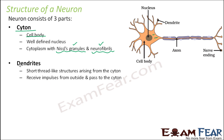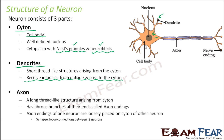The next part is dendrites. Often dendrites are not considered a separate structure — sometimes they are included in the cell body. Dendrites are short thread-like structures arising from the cytoplasm. From the cell body there are short hair-like extensions called dendrites. Their function is to receive impulses from outside and pass them to the cytoplasm — that is, to the cell body. So dendrites are basically the receivers.